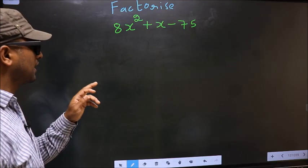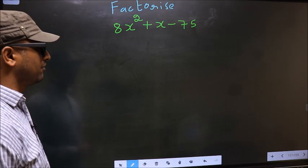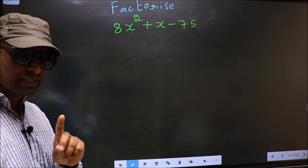Factorize 8x square plus x minus 75. To factorize, step 1.